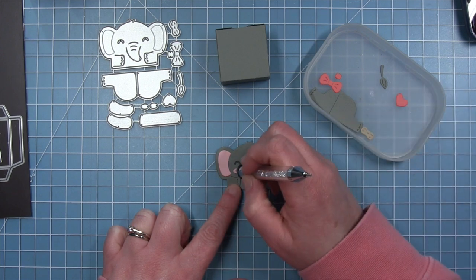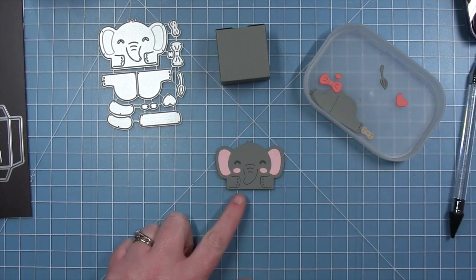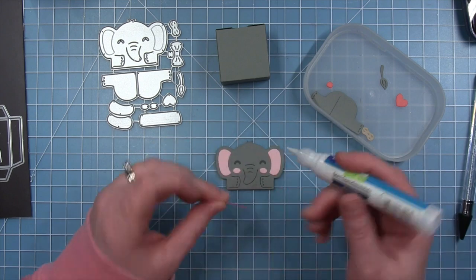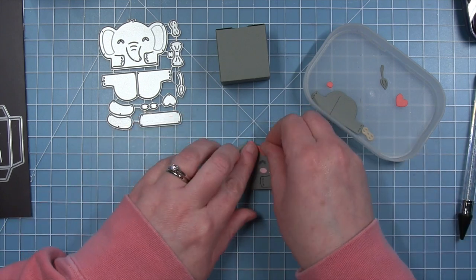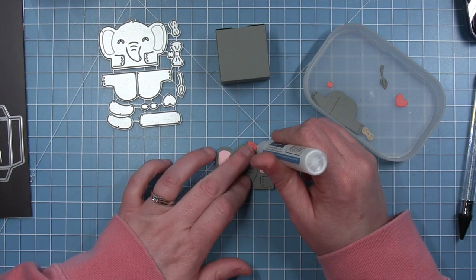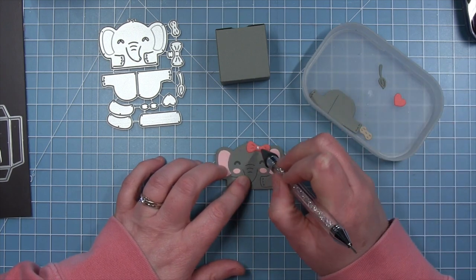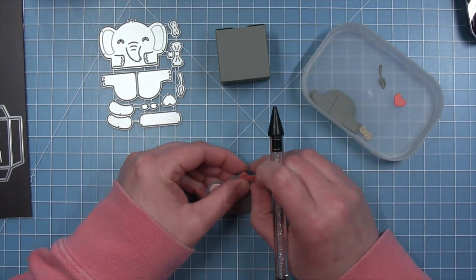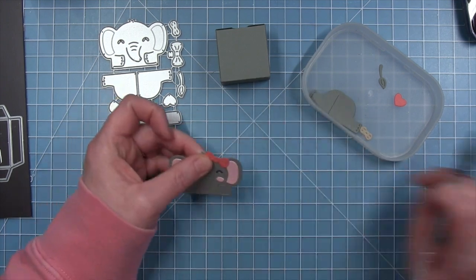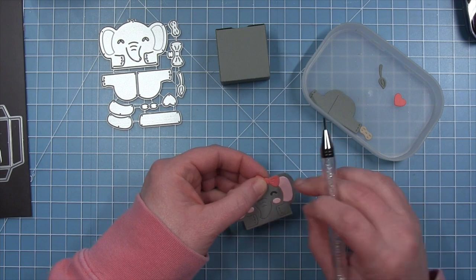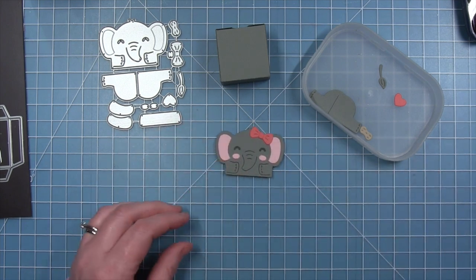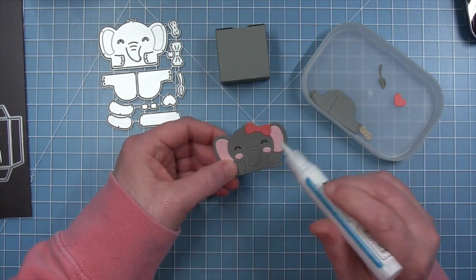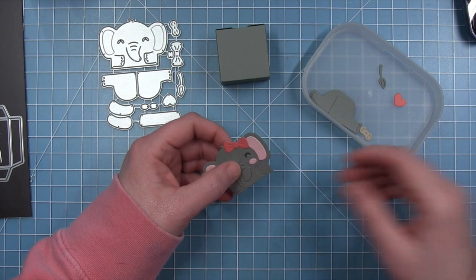There's also the little ovals for the rosy cheeks, and then there's also this little bow. Now this could go in the elephant's hair, or it could be a bow tie, which is how I'm going to use it on my card. And then there is also a piece that cuts the center of the bow. For mine, I'm just doing them both the same color, so you just get the dimension, but you could also use two different colors to create a different color in the center of the bow.